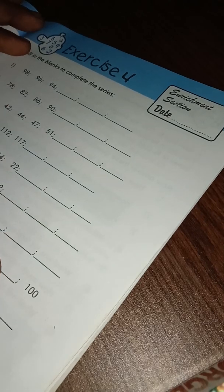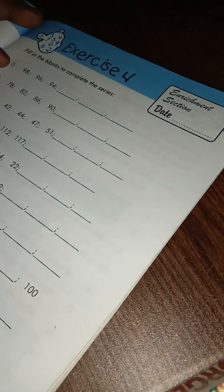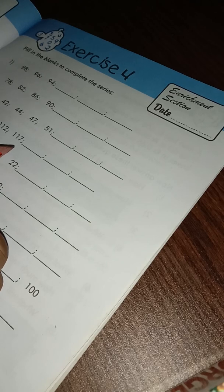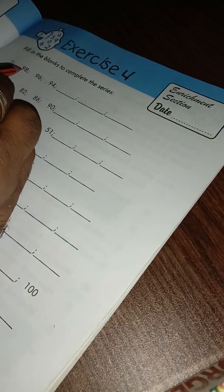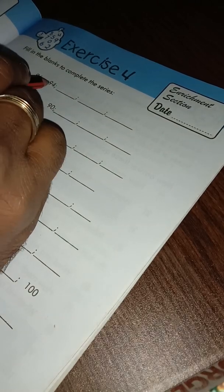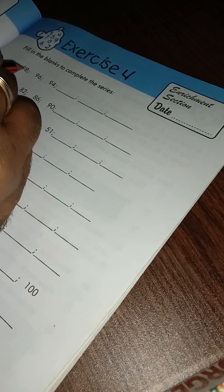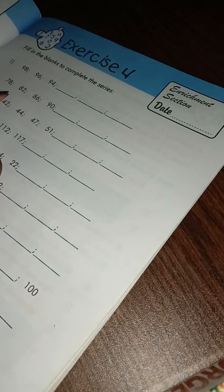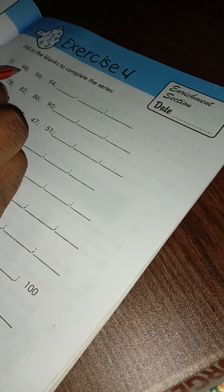Get ready for doing sequences and fill in the blanks to complete the series. Here first is 98, then 96, then 94. So 98 and 96, difference between the two is 2.